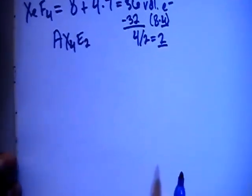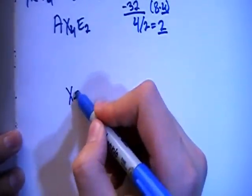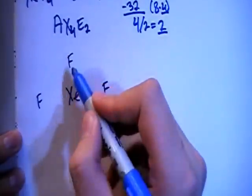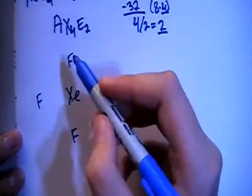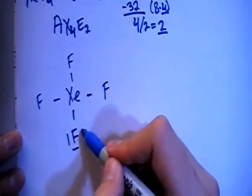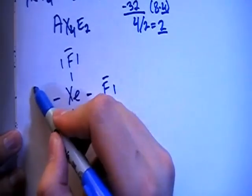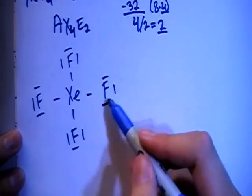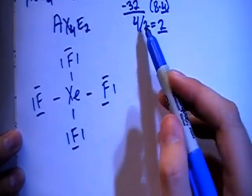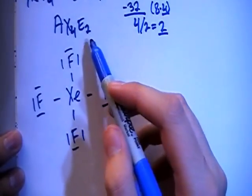So let's go ahead and draw this structure. So we have the xenon in the center, surrounded by the 4 fluorines. And we can go ahead and single bond all of those. And let's fill in the remaining shells, the electrons for the fluorines. So there's your 8, 16, 24, 32 electrons. So we still have to do these 4 more electrons. And that's where these 2 non-bonding pairs are going to come in.